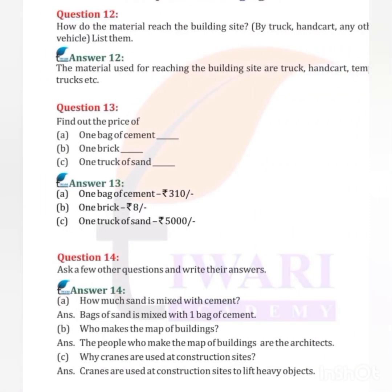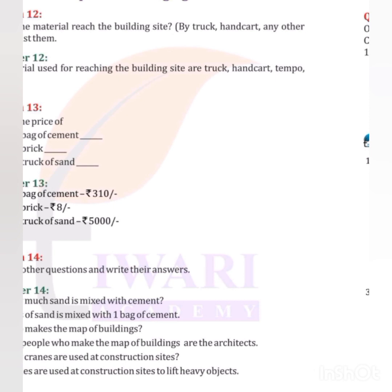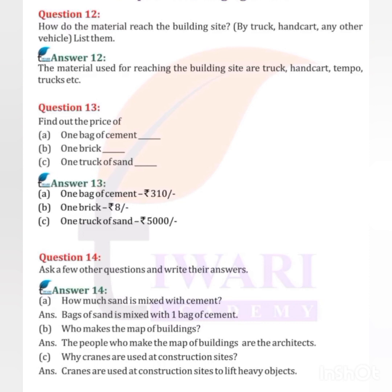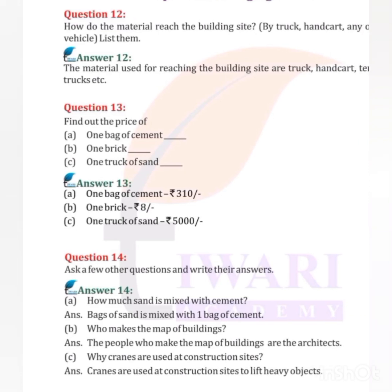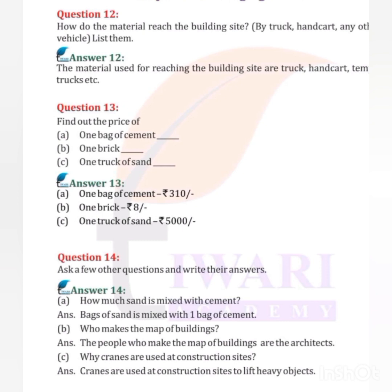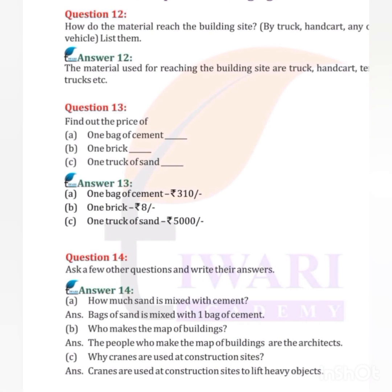How do the materials reach the building site? By truck, handcart, tempo, and other vehicles. Price of 1 bag of cement is Rs. 310; 1 brick costs Rs. 8,000 per thousand; 1 truck of sand costs Rs. 5,000. Additional questions: How much sand is mixed with cement? Bags of sand are mixed with 1 bag of cement. Who makes the map of buildings? The architects. Why are cranes used at construction sites? Cranes are used to lift heavy objects.